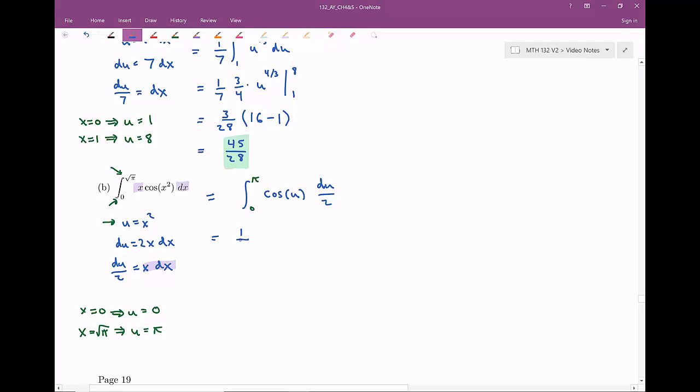I factor out the one half here, and when I integrate cosine with respect to u, I'm going to get sine of u, and I need to evaluate that from zero to pi. When I plug in pi for u, or when I plug in zero for u, either one of these cases, you get out zero. The sine of pi is zero, minus sine of zero is zero, so this just gives out the value zero.